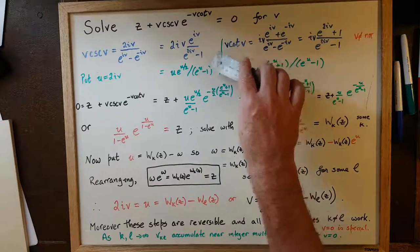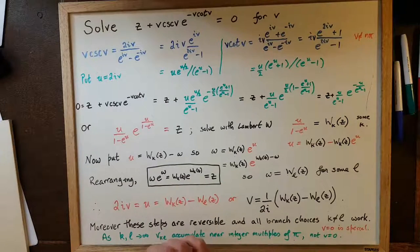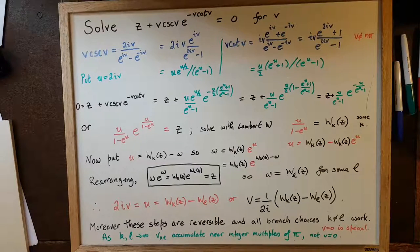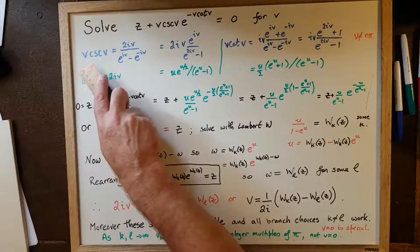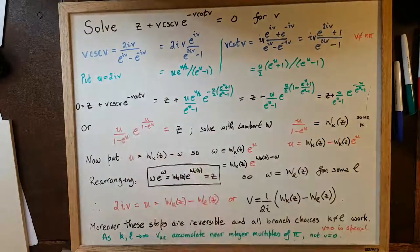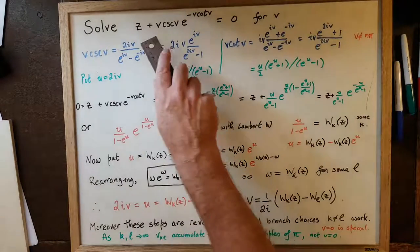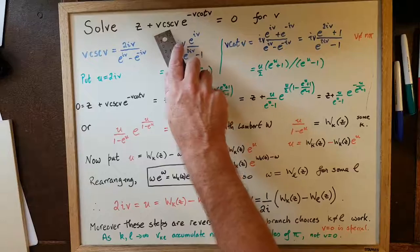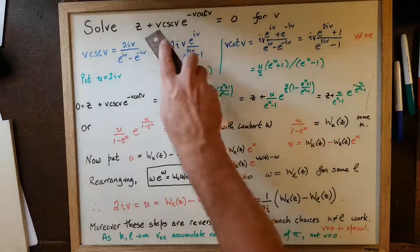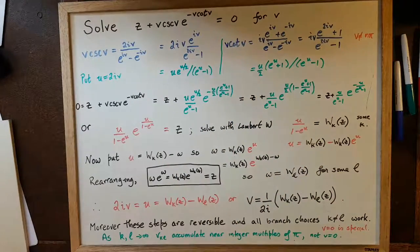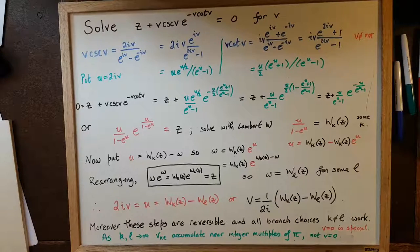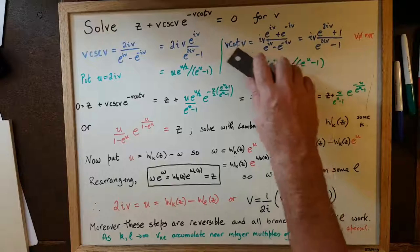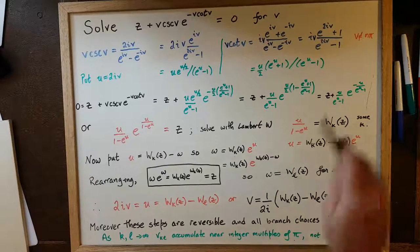The case v equals 0, corresponding to n equals 0, is special. As v goes to 0, v over sine v tends to 1, and cosine v tends to 1, so the expression equals 1 in the limit. Similarly, the cotangent term tends to 1 as v goes to 0. Therefore v equals 0 can only be a solution when z equals 1 times e to the minus 1, i.e., z equals minus e to the minus 1. For other values v equals nπ, we get division by zero, which is a singularity.